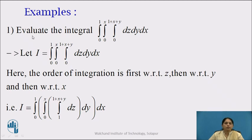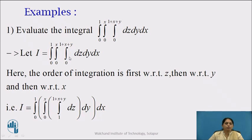Now let us see the examples. Evaluate the integral: integration from 0 to 1, integration from 0 to x, integration from 0 to 1 plus x plus y, dz dy dx. Let us call the given integral I. The differentials are arranged in dz dy dx order, so the first integration is with respect to z, then with respect to y, and then with respect to x. The inner integral is expressed in terms of x and y, so these are the limits of z. The middle integral is expressed in terms of x, so this is the limit of y, and the outer integral gives the limit of x.